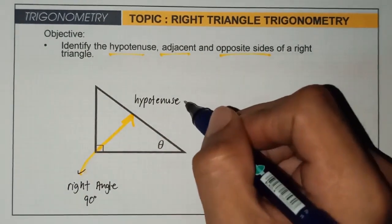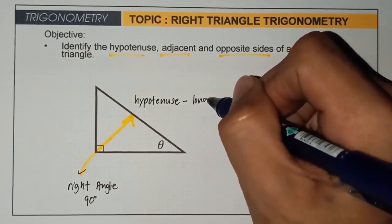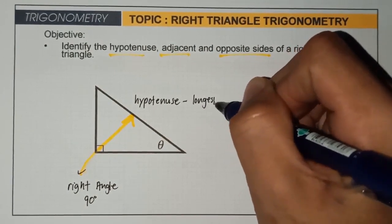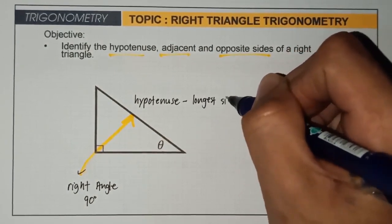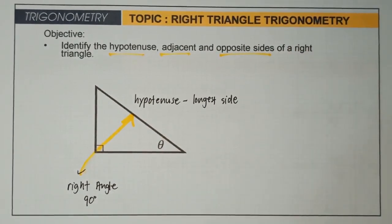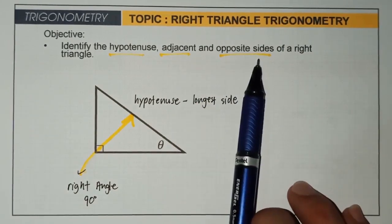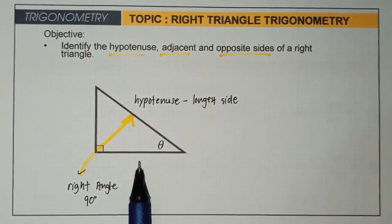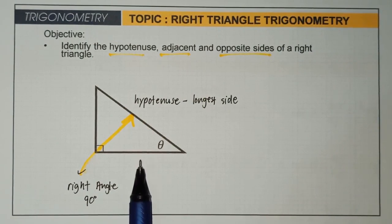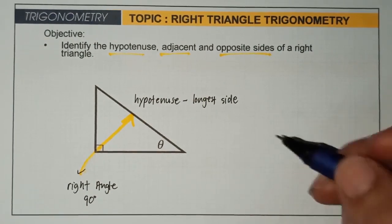Take note: the hypotenuse is the longest side. But the question here is: where is the adjacent and where is the opposite side of this triangle? To answer that, we need to know where the reference angle is.